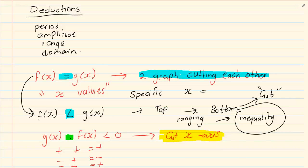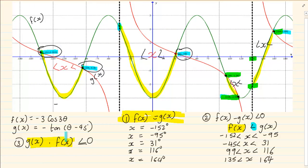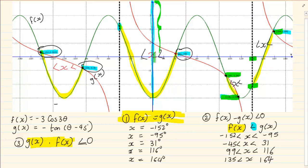Now if I want less than 0, that means I'm working where the two graphs have different signs. Now if I'm talking of the signs — you see f(x) and g(x) refers to the y-line — so when I'm talking of the sign, I'm talking of specifically: is the y positive or is the y negative?